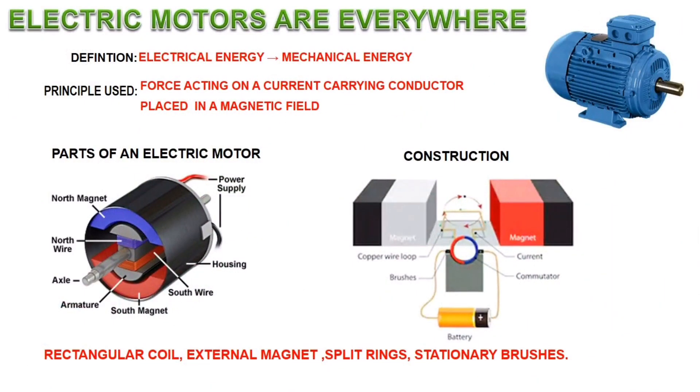Electric motors are everywhere. Almost every mechanical movement that you see around is caused by an electric current. Basically, an electric motor is a device which converts electrical energy into mechanical energy. The principle used in an electric motor is force acting on a current carrying conductor when it is placed in a magnetic field. The direction of motion is given by Fleming's left hand rule.